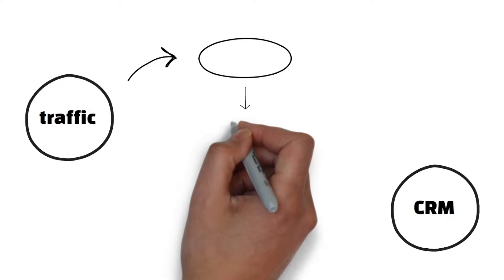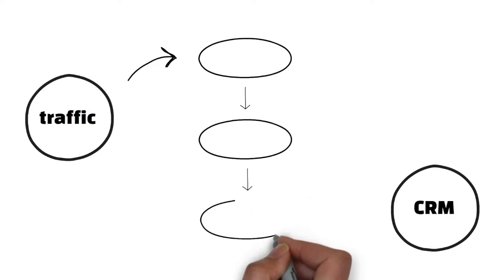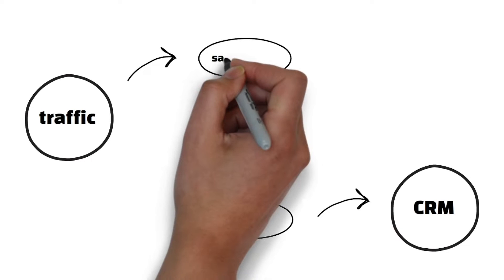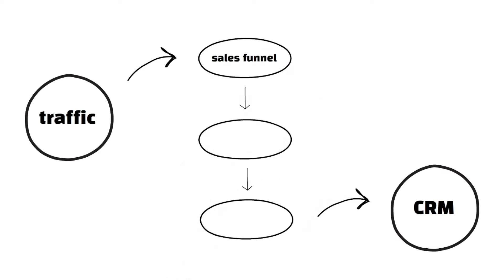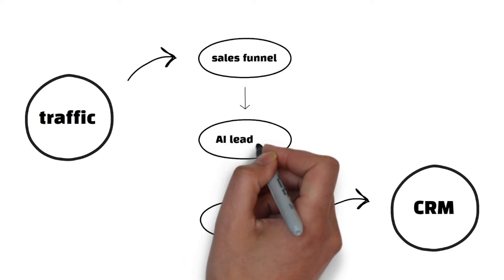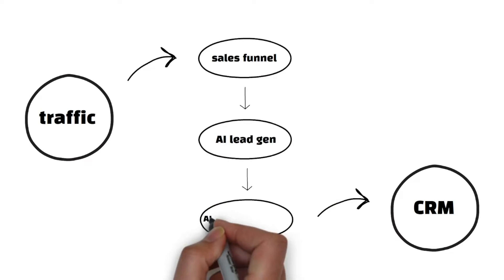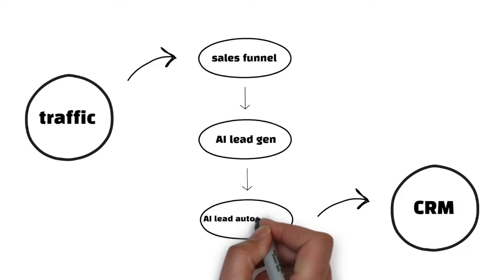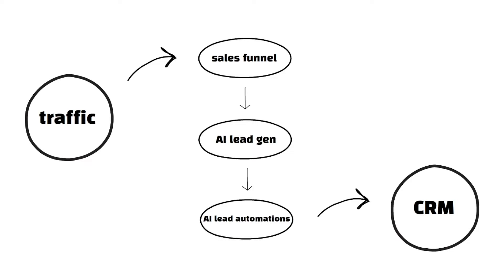If you just want to understand the concept of AI automation, it is just leading the traffic that a certain company has to their CRM. The main reason why we do this is to convert more leads into more sales and more customers, or to just turn cold leads to warm ones. So you have the traffic that a certain company, certain website, certain service already has, then it goes through the sales funnel.